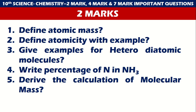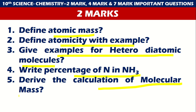Two marks chemistry — the first five top questions are: define atomic mass, define atomicity with example, give examples for hetero diatomic molecules, write the percentage of N in NH3, and derive the calculation of molecular mass. Please make note of these and read accordingly.